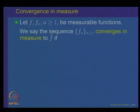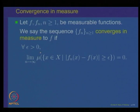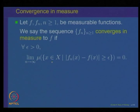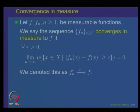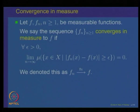Let us just recall what we have been doing. F and F_n are measurable functions on a measure space. We said that F_n converges to F in measure if for every epsilon greater than 0, the measure of the set of all x where |F_n(x) - F(x)| is bigger than or equal to epsilon goes to 0 as n goes to infinity for every epsilon. This was called convergence in measure, denoted by F_n → F with the symbol M above the arrow.